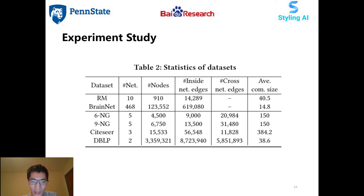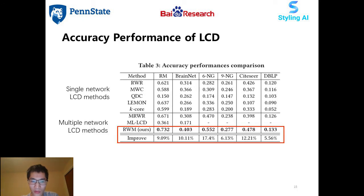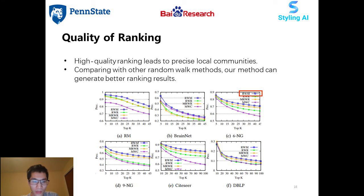We empirically evaluated our method on six real-life datasets from different domains. The Rm and BrainNet are two multiplex network datasets, and the other four are general multi-domain network datasets. We compare our method to both single network LCD methods and multiple network LCD methods. The results show that our method outperforms all baselines by large margins. To gain insight into our method, we further evaluate the quality of ranking, since high-quality ranking leads to precise local communities. We compare our method with other random walk-based methods, including RWR, MRWR, and MWC.